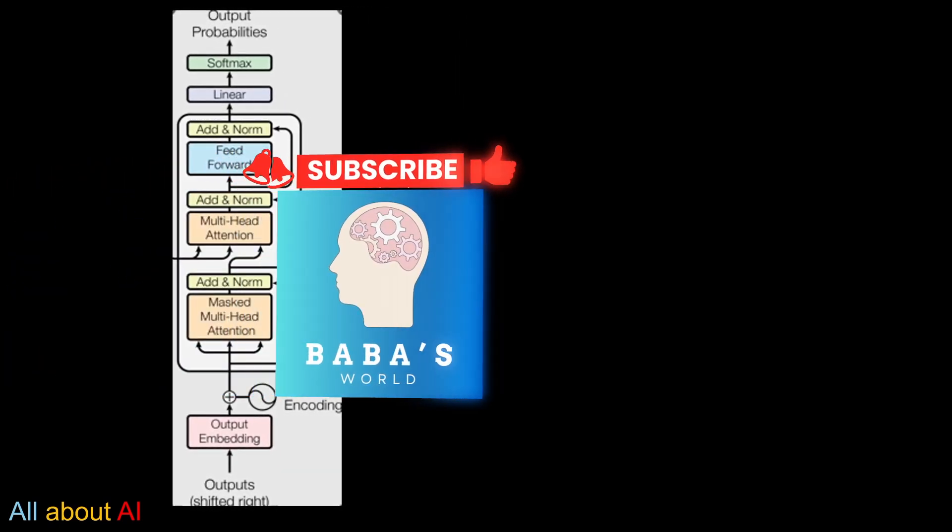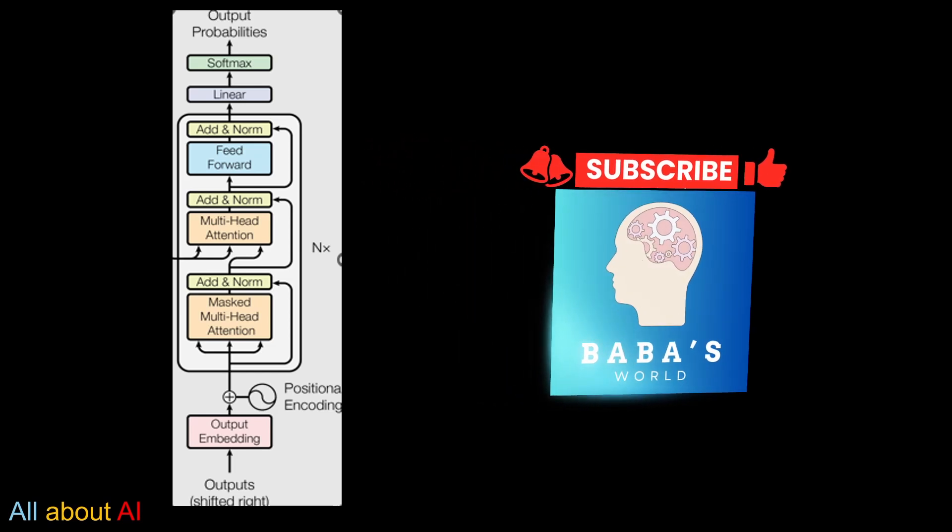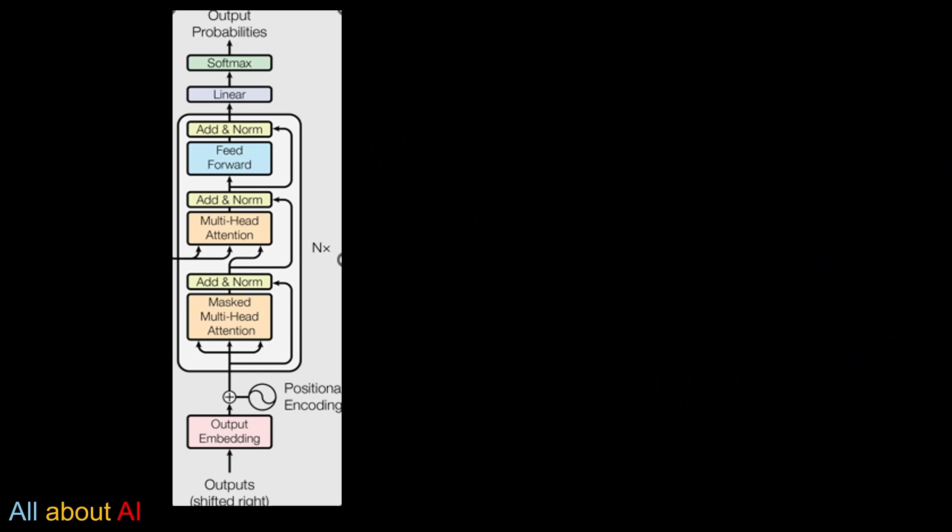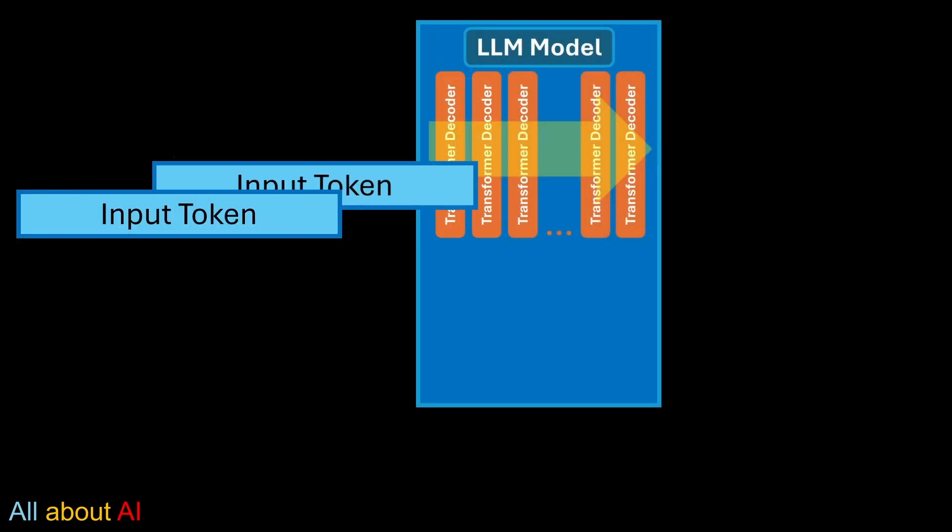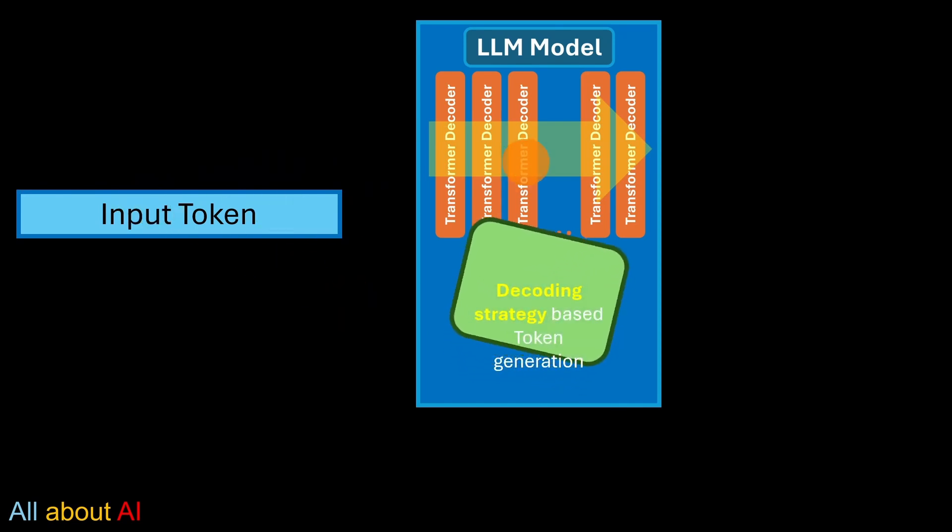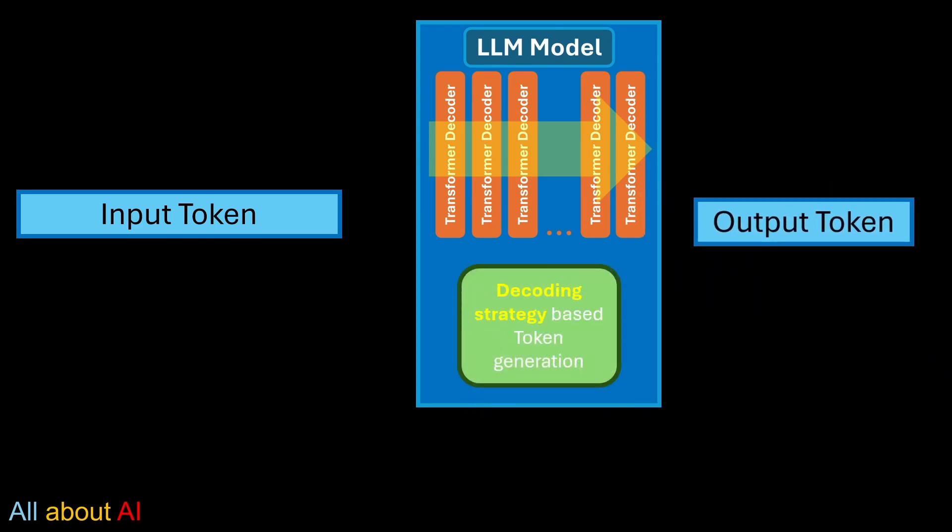If you remember for LLM, it will be decoding part of the transformer model that is used to generate tokens. In LLM model, we'll have multiple decoders and the input token will go through that decoding process and based on decoding strategy, there will be output token that will be generated. And this process will go on where input token plus output token will be fed in the next iteration to generate next output token. And that's how the LLM model generate one token at a time and it uses decoding strategy.